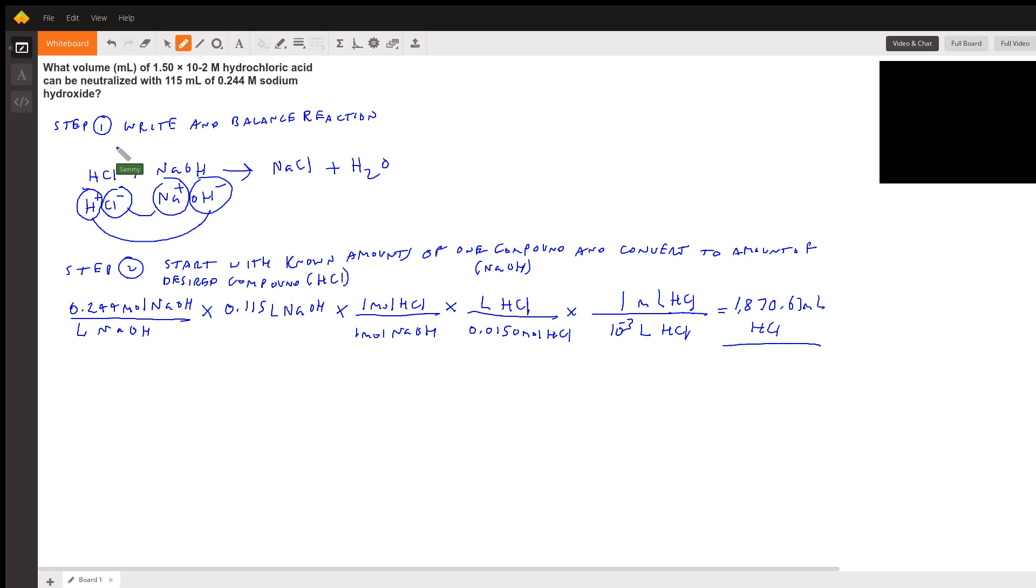The first step is we need to write and balance the reaction. We have hydrochloric acid which is HCl and we have sodium hydroxide which is NaOH. We need to break these up into their charges: H has a positive charge, Cl has a minus charge, Na has a positive charge, and OH has a minus charge.